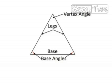The congruent sides of an isosceles triangle are its legs. These are the legs right here. And the third side is the base. This is the base. The two congruent legs form the vertex angle, and the other two angles are the base angles.